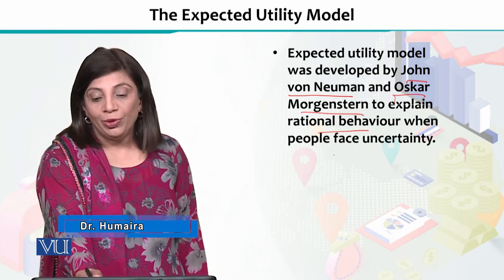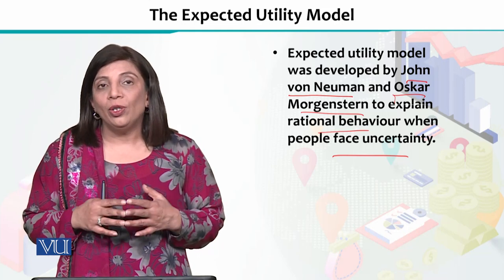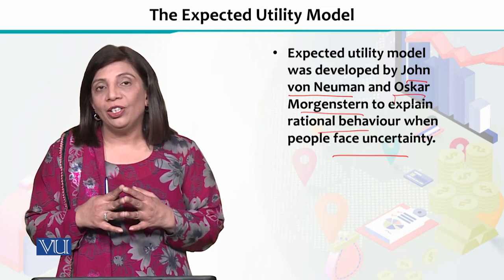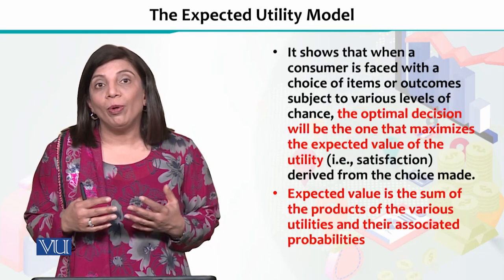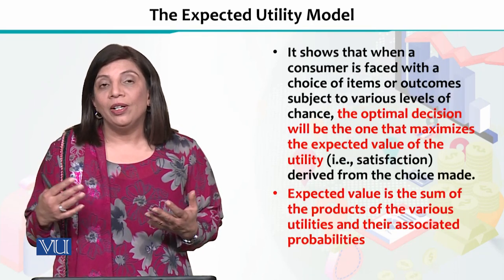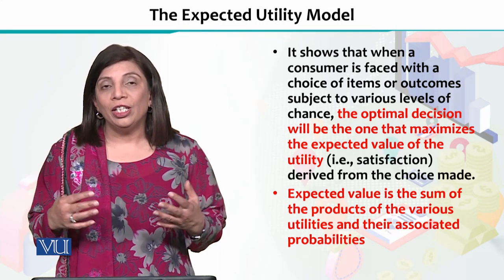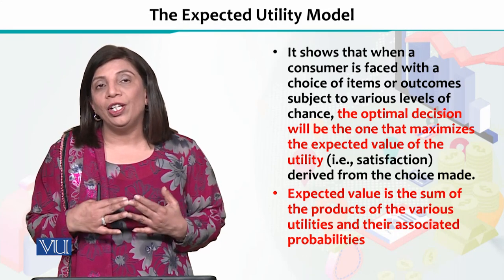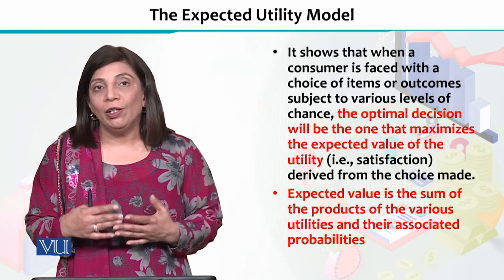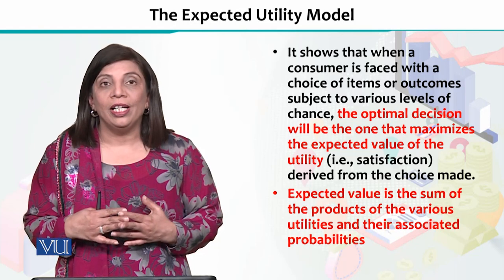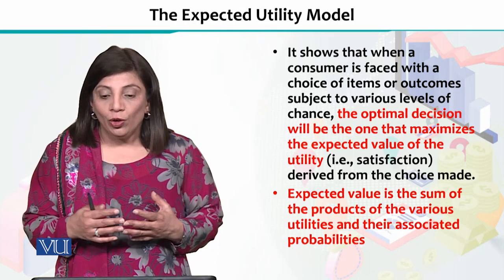If they are going to take a decision in terms of uncertainty, which means that there are probabilities and risks that can come in terms of the situation, the model explains how their utility or satisfaction can be determined. This explains how people can use the expected utility model.